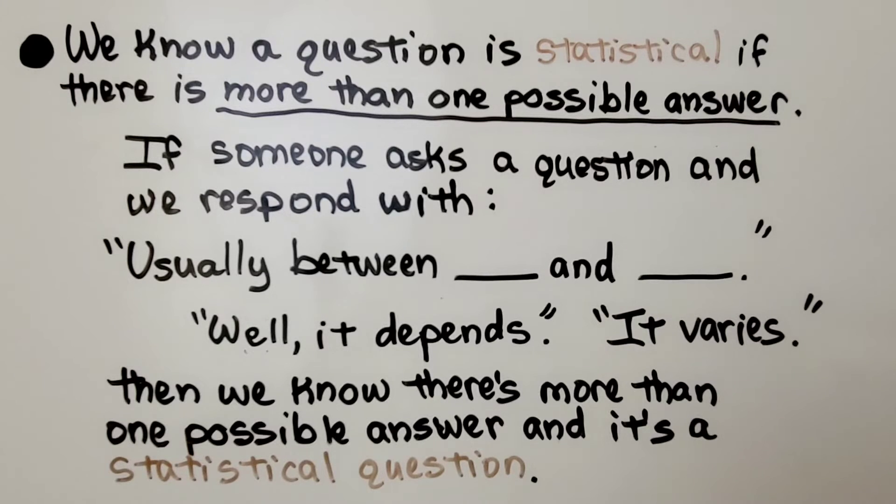We know a question is statistical if there's more than one possible answer. If someone asks a question and we respond with usually between blank and blank, or if we say it depends, or if we say it varies, then we know there's more than one possible answer and it's a statistical question.